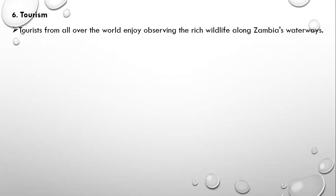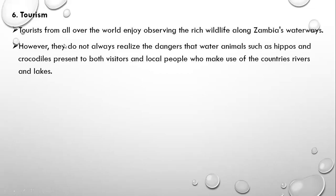One important thing to know about these drainage features is that when tourists come — either local or international — they do not always realize the dangers that water animals such as hippos and crocodiles present to both visitors and local people who make use of these rivers and lakes. Hippos kill more people in the world than lions do.